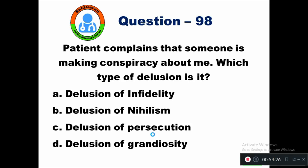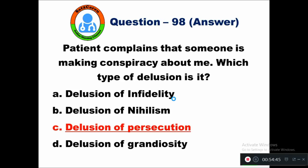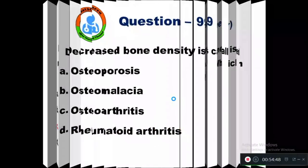Question 98: A patient complains that someone is making a conspiracy about them. Which type of delusion is it? Option A delusion of infidelity, B delusion of nihilism, C delusion of persecution, D delusion of grandiosity. This belongs to the type — delusion of persecution. The right answer is option C.